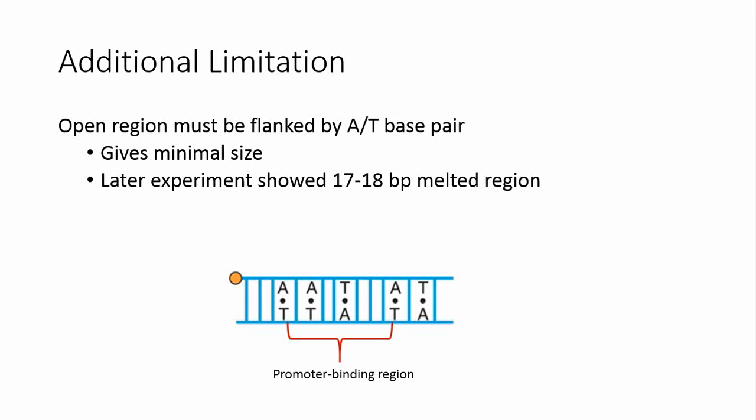To finish, besides the blur of nucleotides that occurred, another limitation to this experiment is that the promoter binding region needs to begin and end with an adenine or thymine in order to be mapped accurately. If it starts with a cytosine or guanine, those will not get methylated and may not show up on the gel as part of the melted region. We are seeing the minimal size our promoter binding region can be.